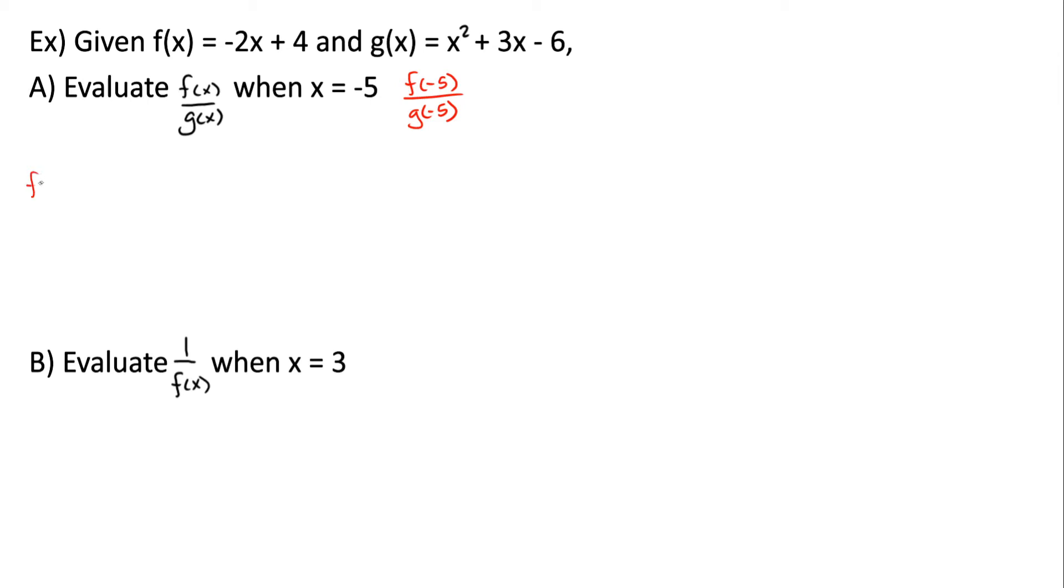So f of x over g of x is equal to negative 2x plus 4 divided by x squared plus 3x minus 6. Now all we need to do is substitute negative 5 everywhere we see an x in this. We simplify this and we end up getting 14 over 4, which comes out to be 3.5.